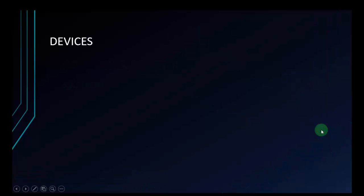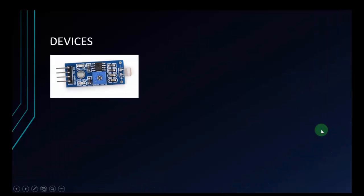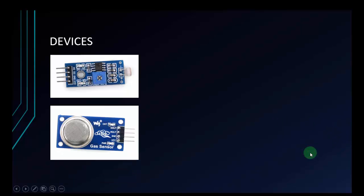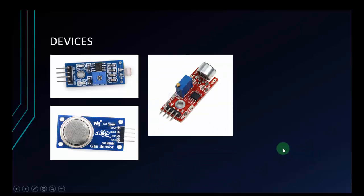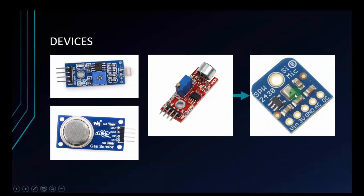In this video, I will make an example with 3 devices. First is photosensitive resistance sensor, gas module, and microphone. We can use a cheap microphone, but I don't have it right here, so I will use this microphone instead. This is the product from Adafruit and it's more stable, but it's expensive.